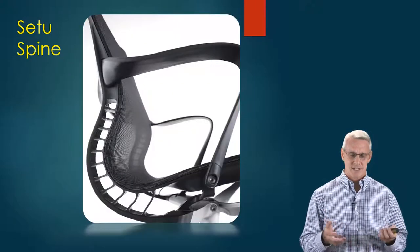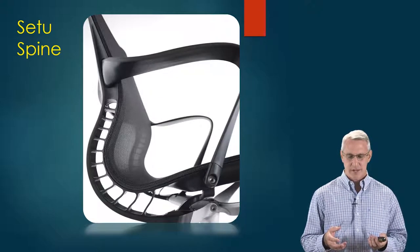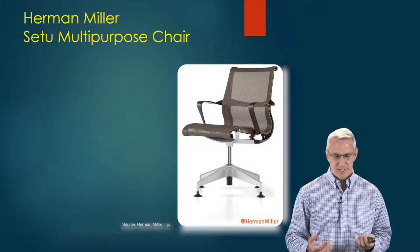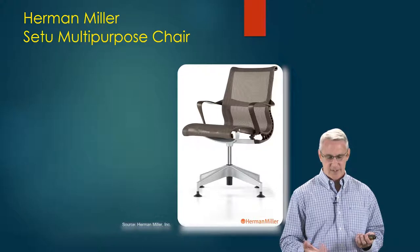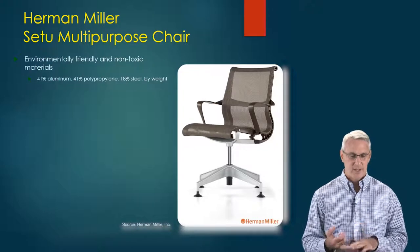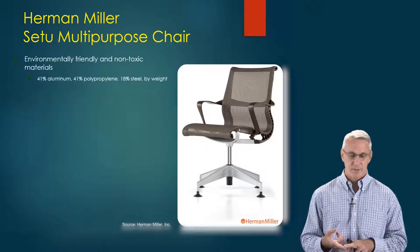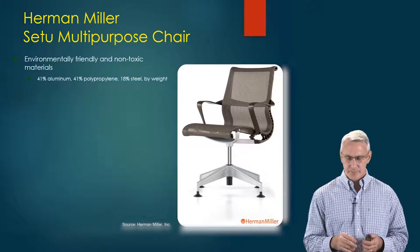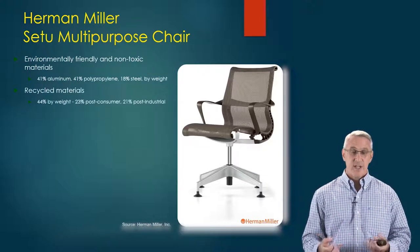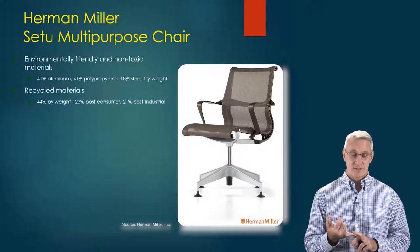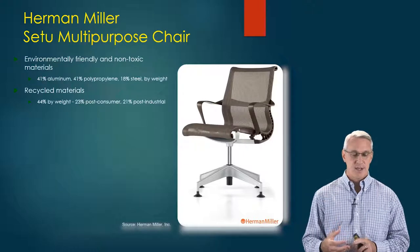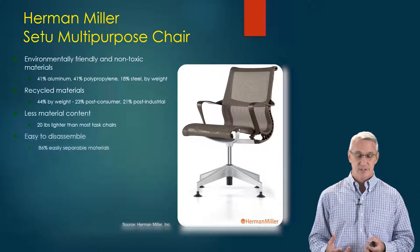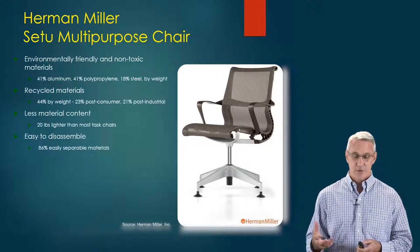What they really did is they redesigned everything for the C2 Spine chair. They took the best technology they had and refined all their design to do several things. It's a multi-purpose chair with a fixed base and also a roller base. It's environmentally friendly with non-toxic materials — about 41% aluminum, 41% polypropylene, 18% steel by weight. There are areas where they still had to use steel for strength, and other areas where they used aluminum. For recycled materials, they can recycle 44% by weight: 23% post-consumer — reclaimed after somebody has already bought the chair — and 21% post-industrial, which is from the production process. It's also 20 pounds lighter than most other task chairs. It was easy to disassemble, with 86% easily separable materials.